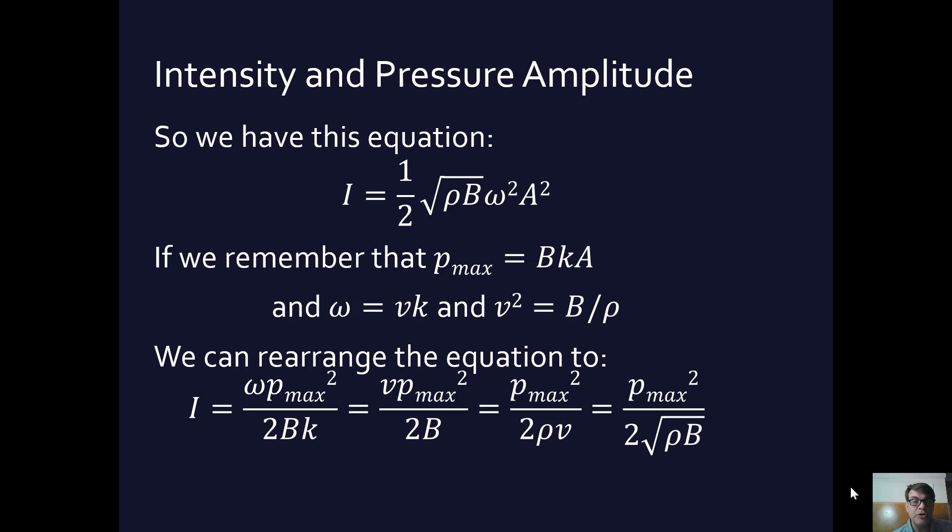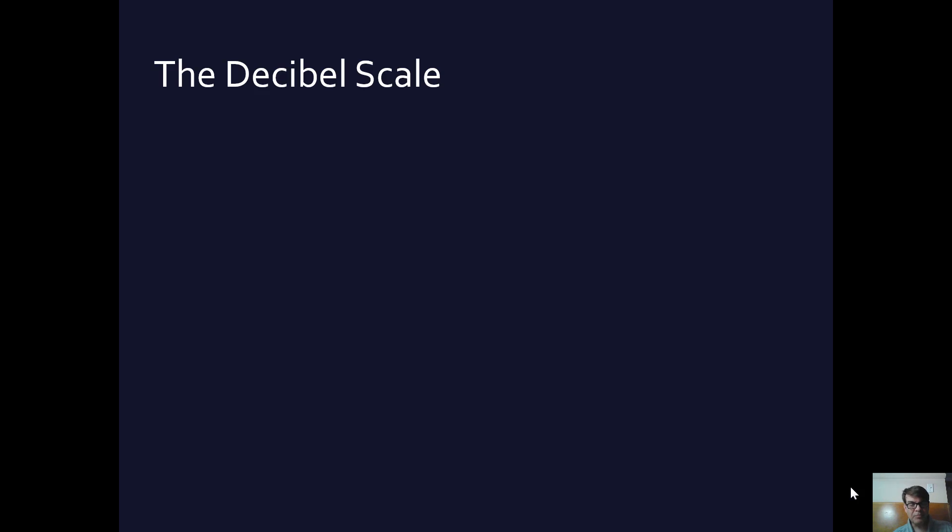And again, which equation you use depends on basically what you're given and what you're not given. So the intensity can be expressed as ω times the maximum pressure amplitude squared over 2Bk, or it could be the velocity times the square of the pressure amplitude over 2B, or it could be the pressure amplitude squared over 2ρv, or it could be the pressure amplitude squared over 2 square root of ρB. Again, all of this is just using algebra to rearrange things to get you whatever equation is going to work best, given the variables that you've been given. Okay, so there you have some stuff on intensity.